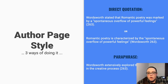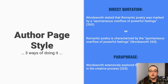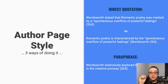MLA format follows the author-page method of in-text citation. This means that the author's last name and the page number from which the quotation or paraphrase is taken must appear in the text. A complete reference should also appear in your works cited page at the end of the document. The author's name may appear either in the sentence itself or in parentheses following the quotation or paraphrase, but the page numbers should always appear in the parentheses, not in the text of your sentence.